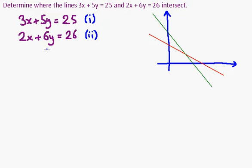Now, you can choose whether to eliminate the x's first or the y's first. I'm going to eliminate the x's. In order to do that, I'm going to multiply equation (i) by 2. The reasoning for this will become quite clear. So I'm going to get 2 times 3x is 6x + 10y = 50, and I'm going to call this equation (iii).